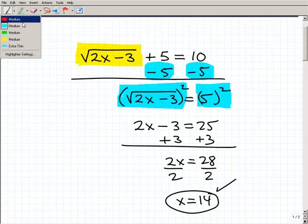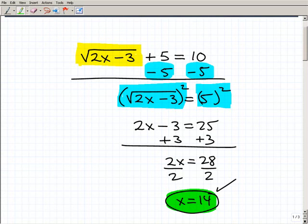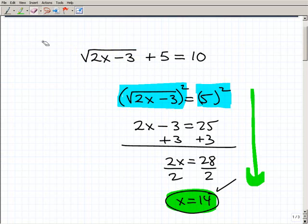Every time you get a solution by doing all this work, this particular number is just kind of like a candidate. It's a possible solution. We have to verify each one of our solutions back into the original equation because sometimes we can end up with things called extraneous roots. In other words...